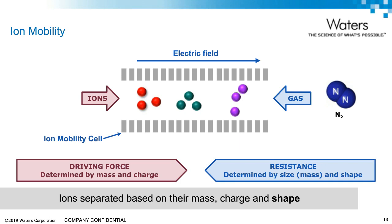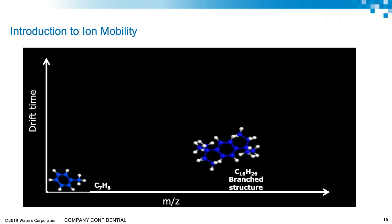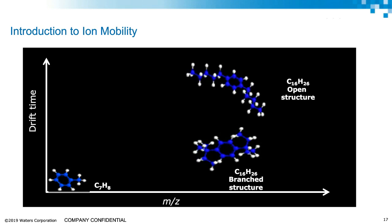In a nutshell, ion mobility provides a mechanism to separate ions based on their shape, size, and charge by tumbling through the ion mobility cell filled with gas. Smaller ions would come out first; heavier ions would come out later. Molecules with the same m/z but different shapes, like two isomers, would drift differently through the mobility cell and can be separated.